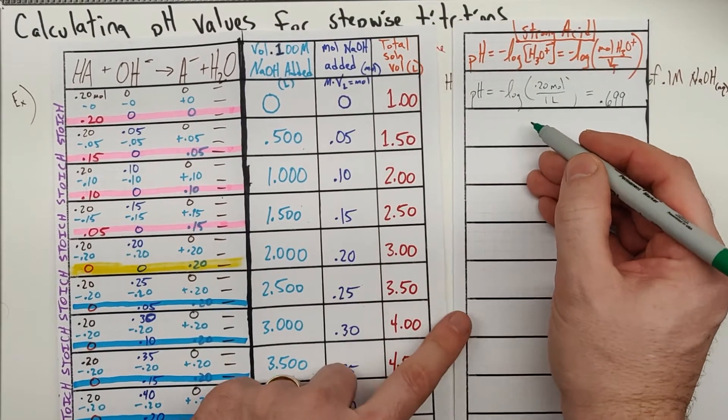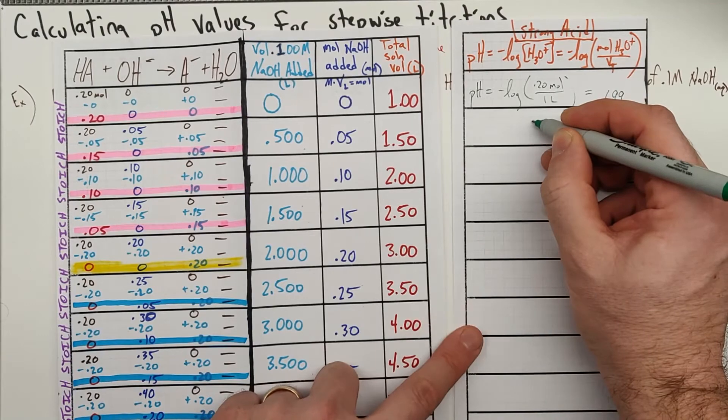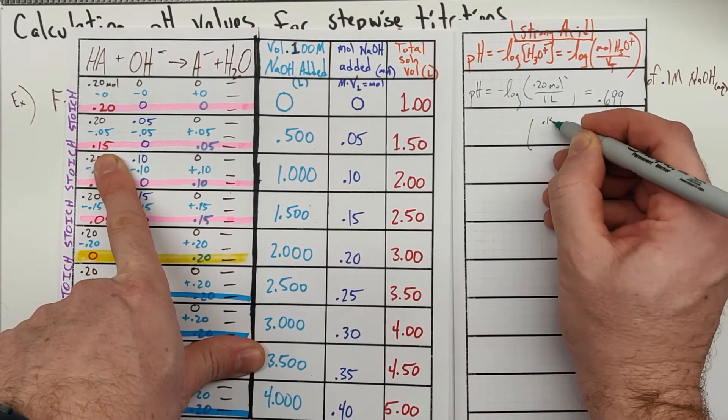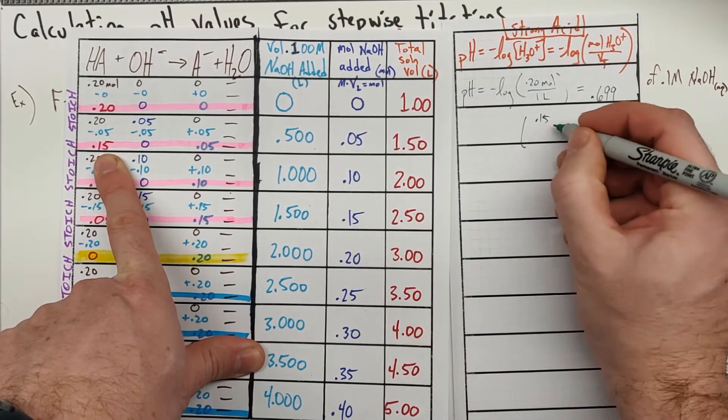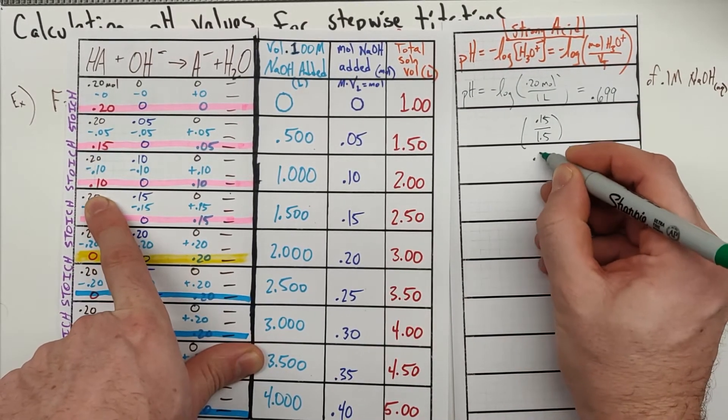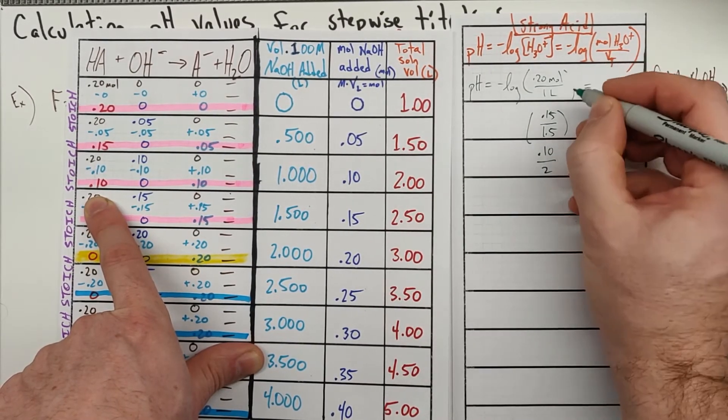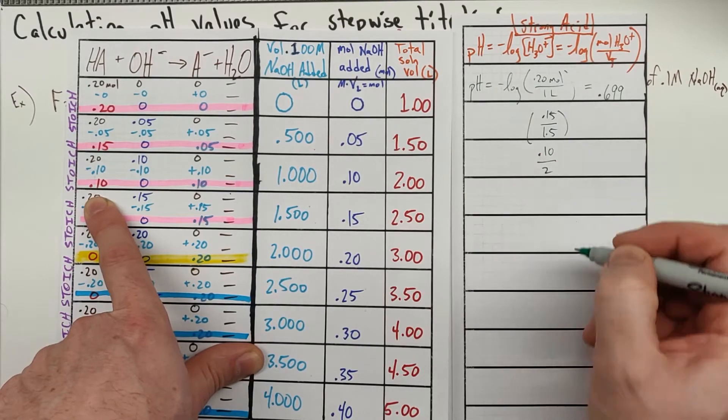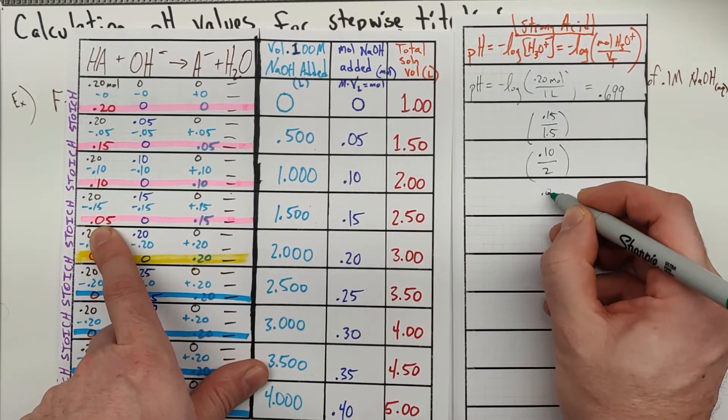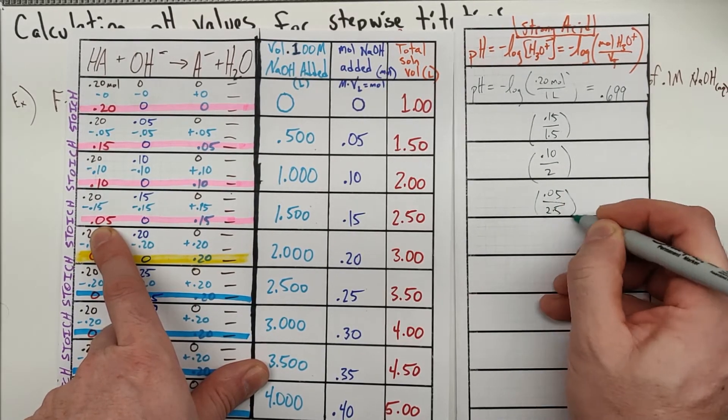As we go down, what's going to change each time. For this one we're going to have that 0.15, but the total volume is now 1.5. And then we're going to have the 0.1, but our total volume is now 2 liters. So moles and liters, moles and liters. We've got 0.05 over 2.5 for our moles and our liters.